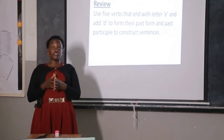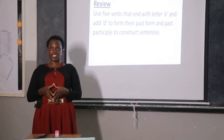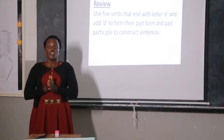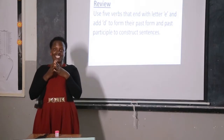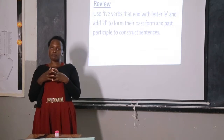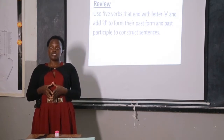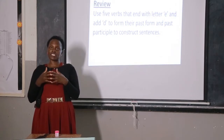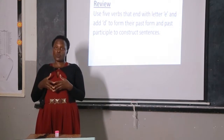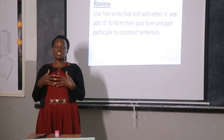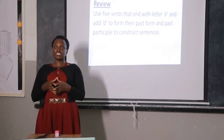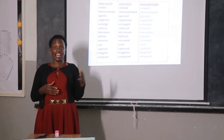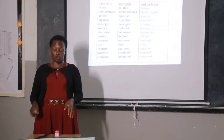As we talk about verbs, I gave you an exercise last time. I told you to write five sentences using verbs that end with the letter E. When you're forming the past form of those verbs, we add D. Even when forming the past participle form, we add D. I hope you wrote those sentences. Now we are going to look at these verbs. I hope you used some of them.